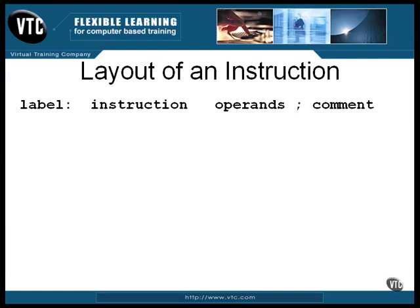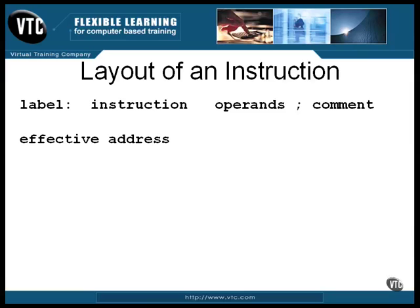The operands you can use depend on the opcode. If there is more than one operand, they are separated by commas. An operand can be a register, which is indicated by its name, or it can be a constant value. For example, an instruction that copies the number 17 into the EAX register. There are several ways of writing constants. One type of operand you'll use a lot is called an effective address — an address obtained by applying indexing or indirect addressing rules to a specified address. Brackets around an expression refer to the contents of an address. For example, an instruction will copy the contents of the memory location called BLOT into the AX register, and any index goes right in the brackets with it.